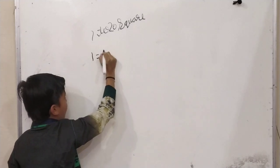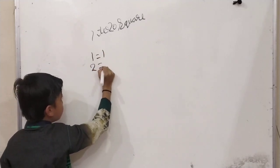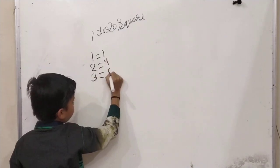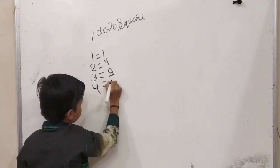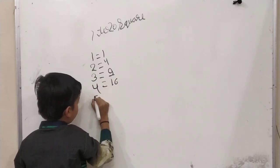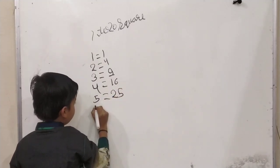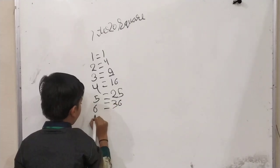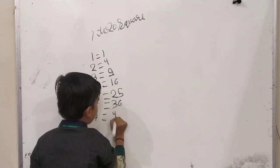One squared equals one. Two squared equals four. Three squared equals nine. Four squared equals sixteen. Five squared equals twenty-five. Six squared equals thirty-six. Seven squared equals forty-nine.